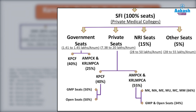Under KRLMPCA (Karnataka Religious and Linguistic Minority College Association), 25% are government seats, 55% are private seats, 15% NRI seats, and 5% other seats. For private seats under KPCF, the 40% is further divided into GMP (General Merit Private) seats and open seats — 50% each. For KRLMPCA's 55% private seats, 66% are allocated to minority groups: linguistic Kodava, linguistic Tamil, linguistic Telugu, religious Christian, and religious Muslim; and 34% are GMP and open seats.